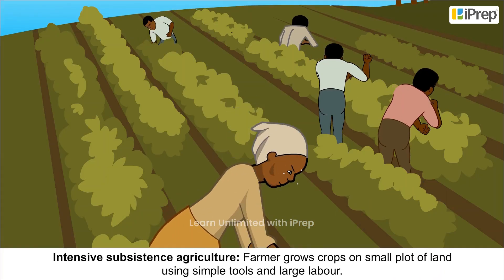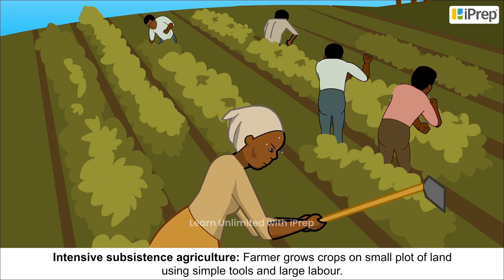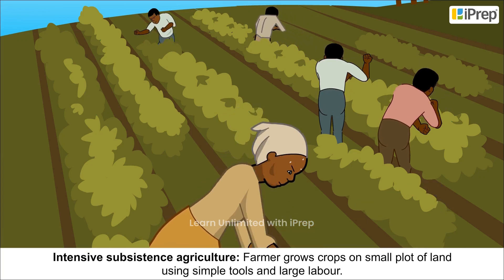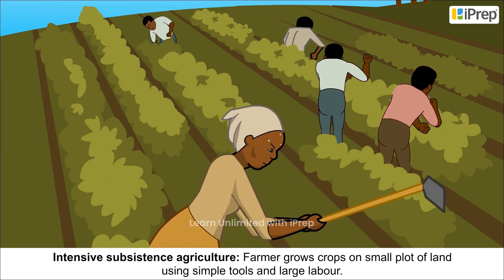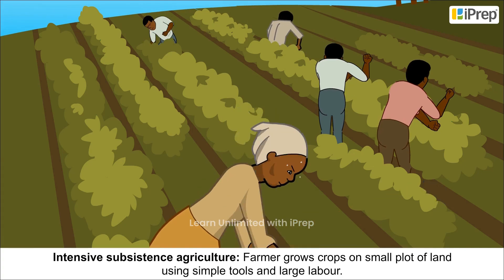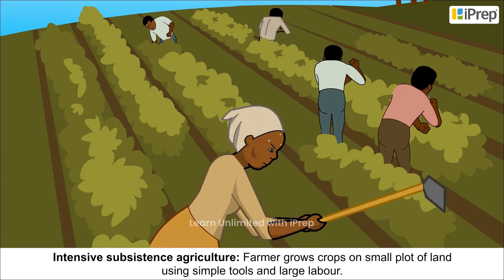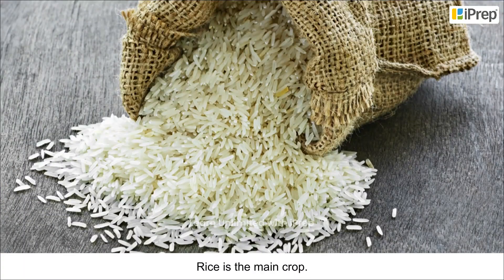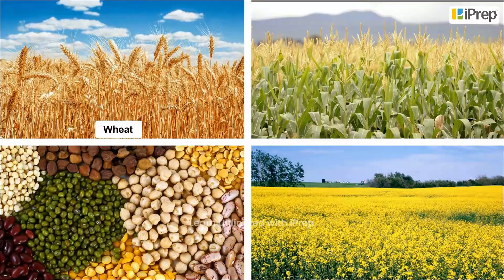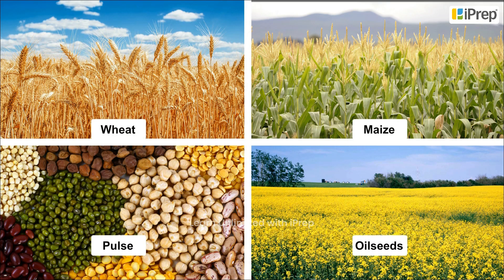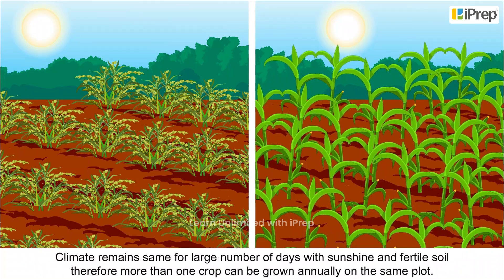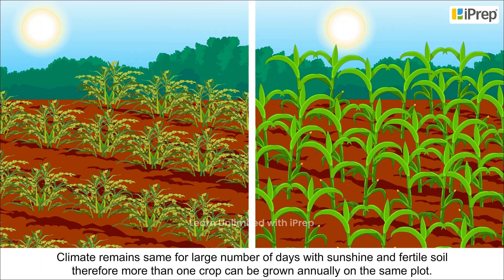Intensive subsistence agriculture: The farmer grows crops on a small plot of land using simple tools and large labour. Rice is the main crop. Wheat, maize, pulses and oilseeds are also grown.